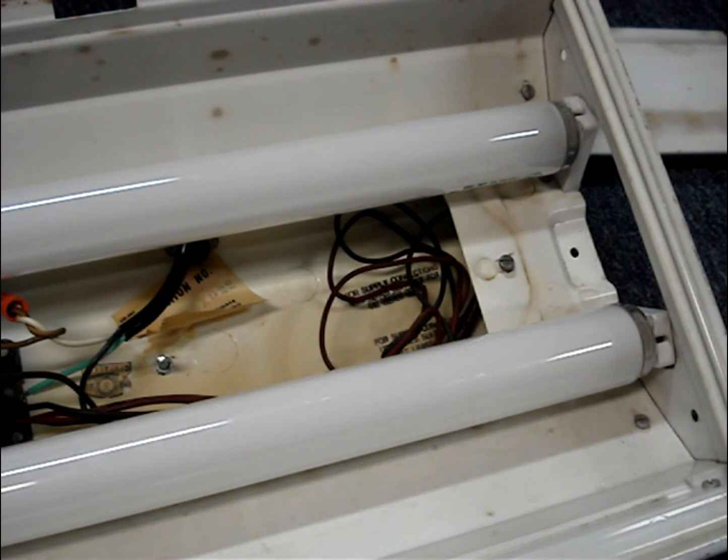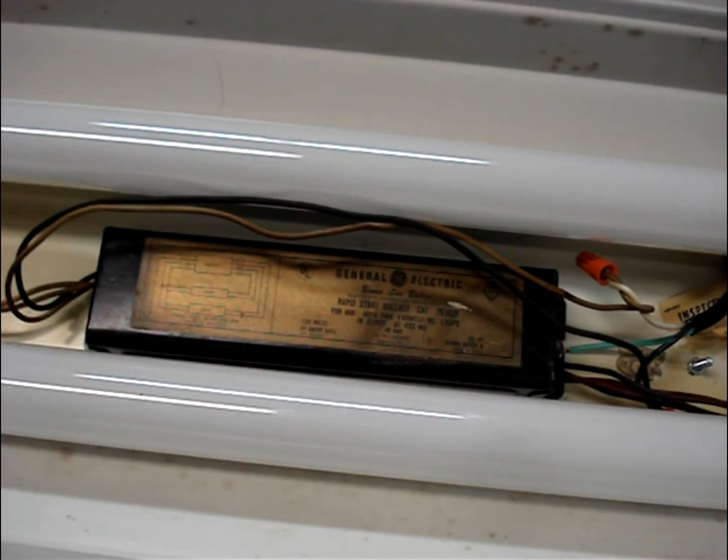When the light is turned on, the ballast sends an AC voltage spike to the ends of the tubes. After the inert gases inside of the tubes arc, then the job of the ballast is to regulate the AC voltage to keep the lights lit. Four different types of ballasts are common and some are wired in parallel and some are wired in series.